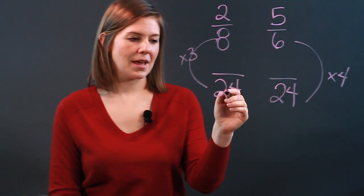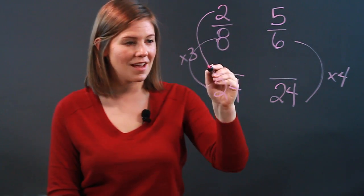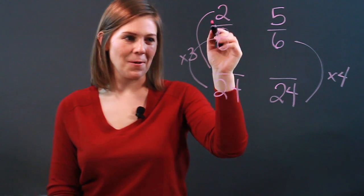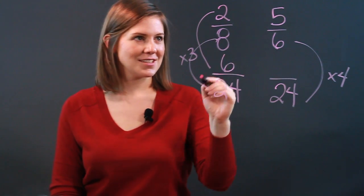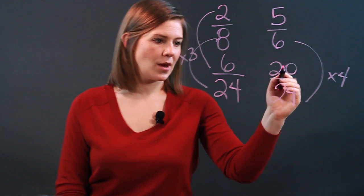So since 8 multiplied by 3 gets 24, in order to get an equivalent fraction to 2/8, we need to make the numerator 2 also multiply by 3. So 2 times 3 is 6 and over here, 5 times 4 is 20.